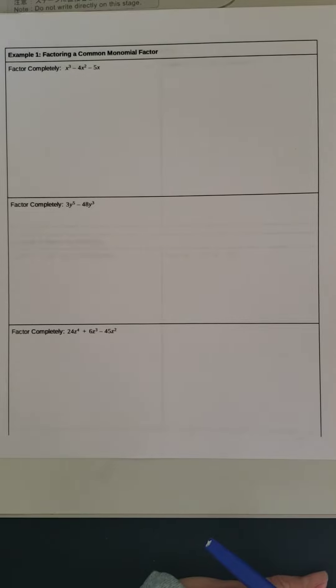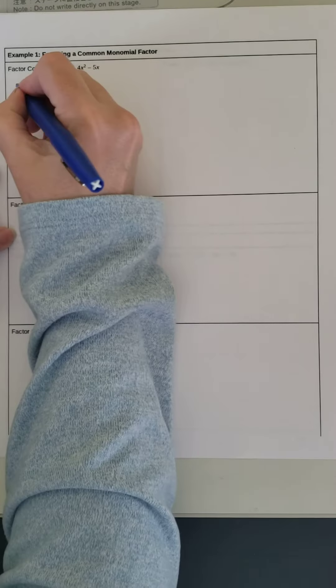If we look at our best factoring practices, the first sheet that was on the packet, the first step is to factor out the greatest common factor. So we're going to look at our three terms, see if there's anything that we can factor out. It looks like there's an x that we can pull out.